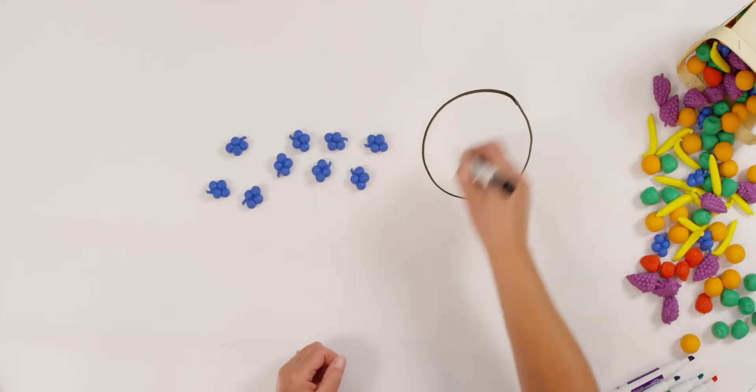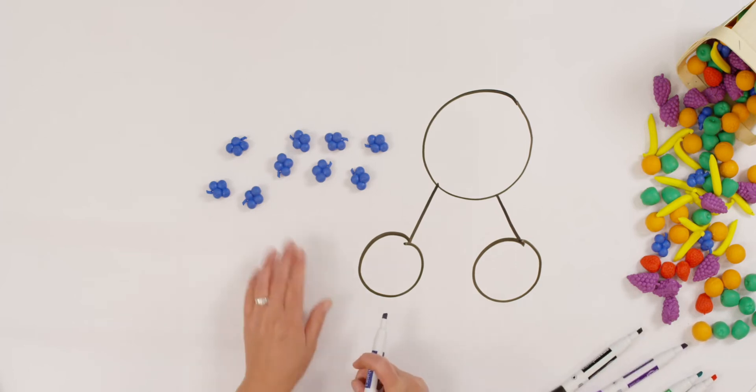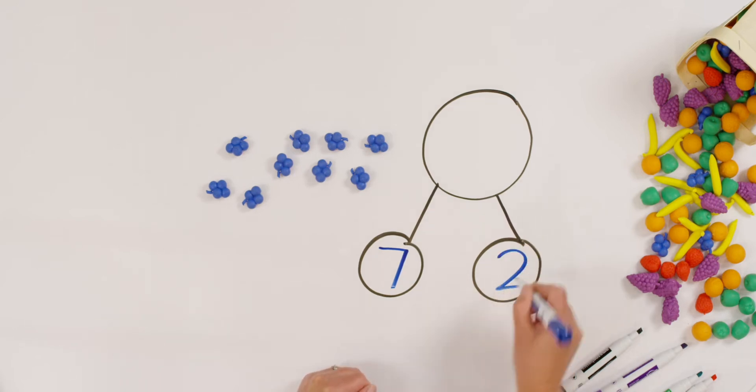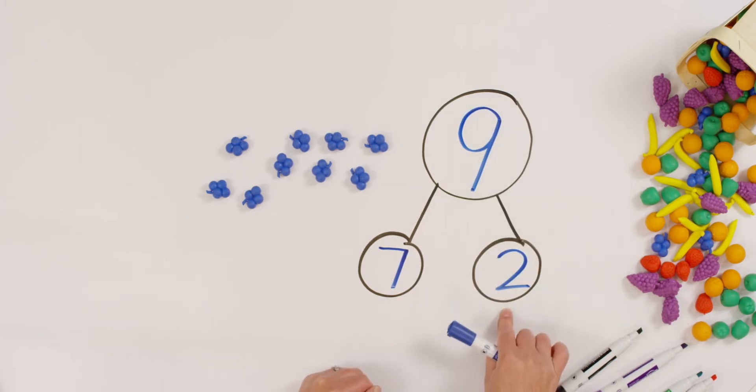Let's show that with a number bond and then we can show it with an addition sentence. So here's my whole, my part, my other part. Can you draw that too? Good. How many blueberries did I start with first? Seven. So let's write seven in one. And how many more blueberries did we add to it? Two more. So how many blueberries are there all together? Nine is right. Seven and two make nine.